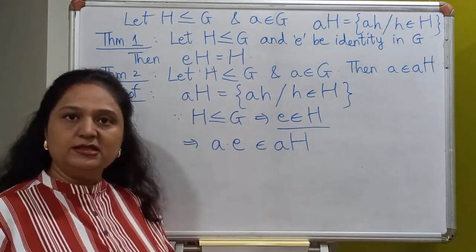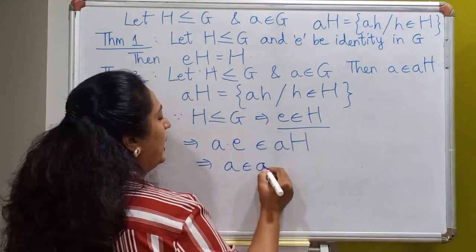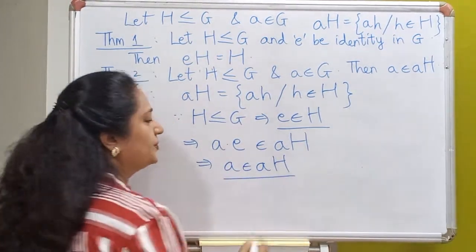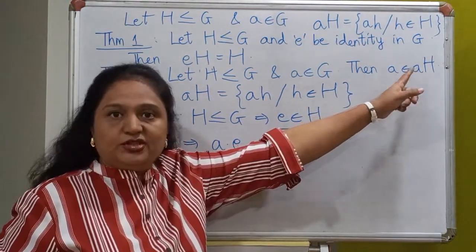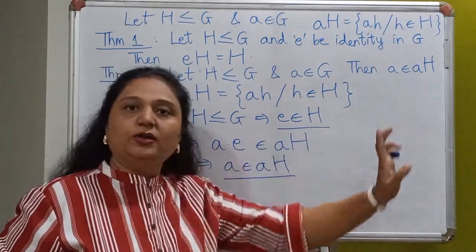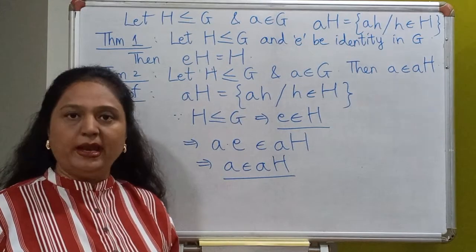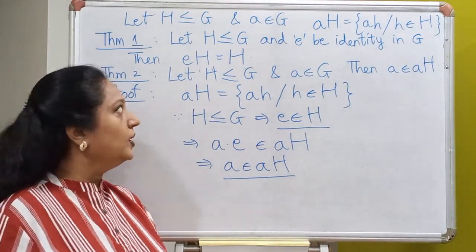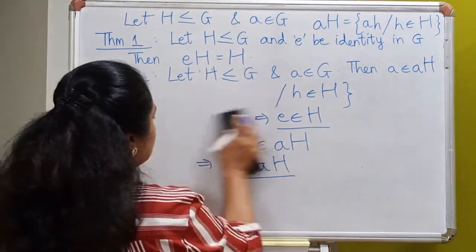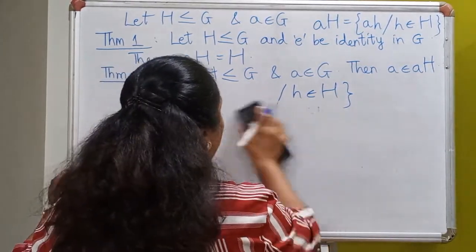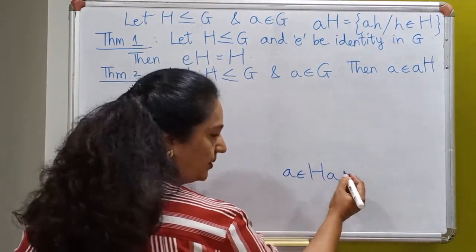So at least the representative A which gives rise to this left coset will belong to the left coset, meaning no left coset is ever going to be empty — every left coset has to be non-empty. Prove the same result for right cosets: you can try and prove that A also belongs to the right coset HA.